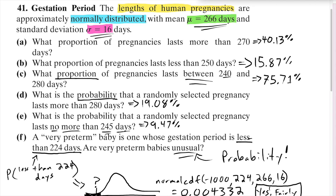Number 41 uses normal CDF in every single part because it's always asking for either probabilities or proportions, and those are all areas under a normal curve. Now let's look at a problem that still involves a normal distribution but asks for a different kind of information — it's going to be going backwards. Let's look at number 47 from this same section.